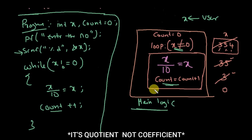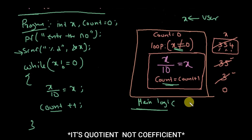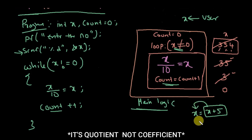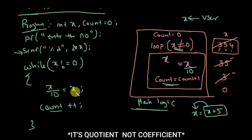There was a small error in the equation. In an assignment like x = x + 5, the right-hand side is evaluated first, then assigned to the left-hand side. So the correct statement is x = x / 10, not the other way around. After fixing this, the logic is correct.